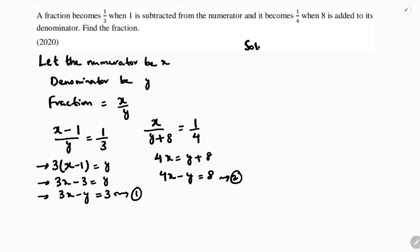Now solving equation 1 and equation 2. So 3x minus y equals 3 and 4x minus y equals 8. Now here the coefficients of y are already same, like 1 and 1, and both are with same sign. So I will subtract.